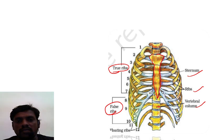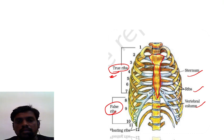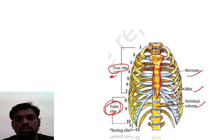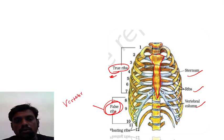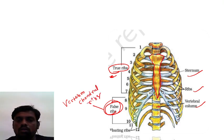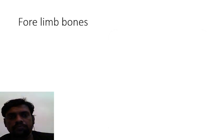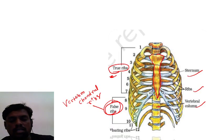To summarize: the first to seventh rib bones are true rib bones. The eighth, ninth, and tenth rib bones are called false rib bones or vertebrochondral rib bones. The remaining part will be covered in the next class.